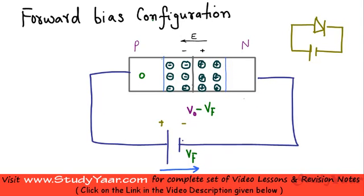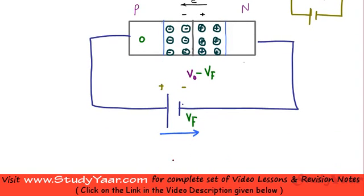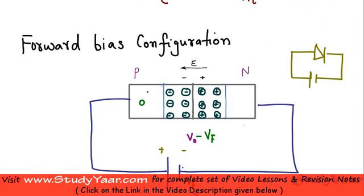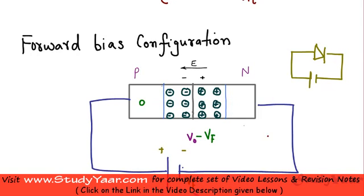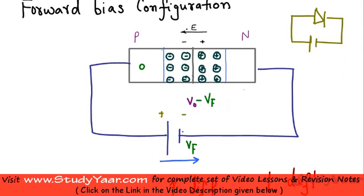Forward bias increases your diffusion current and it reduces your drift current. Since diffusion is happening due to majority charge carriers, your diffusion current is going to be high, and in a forward bias configuration, a high current flows through your PN junction diode. The reason for this high current is that the resistance offered by your depletion region is reduced — your depletion region has narrowed down.